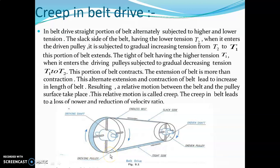This alternate extension and contraction results in relative motion between the belt and the pulley surface. This is called creep. Because of this change in length, there is relative motion. The extension on the slack side and contraction on the tight side causes the belt length to change, resulting in relative motion between the belt and pulley. This is called creep.